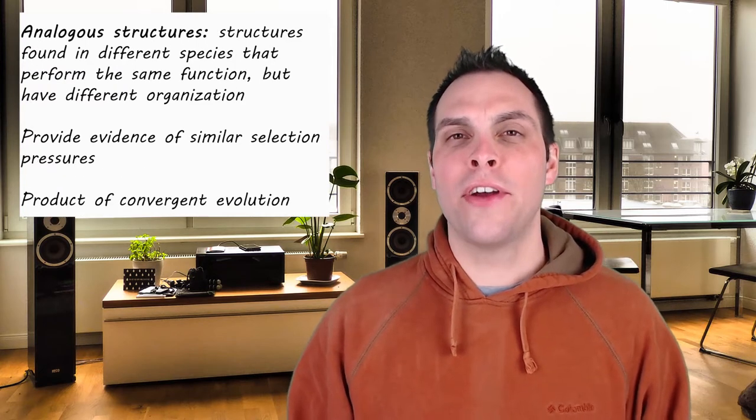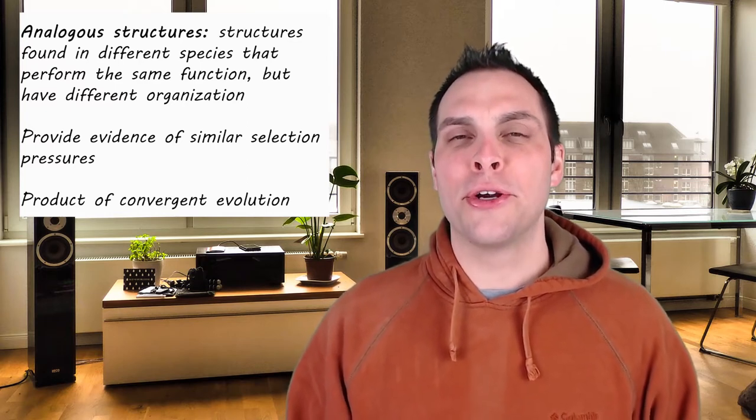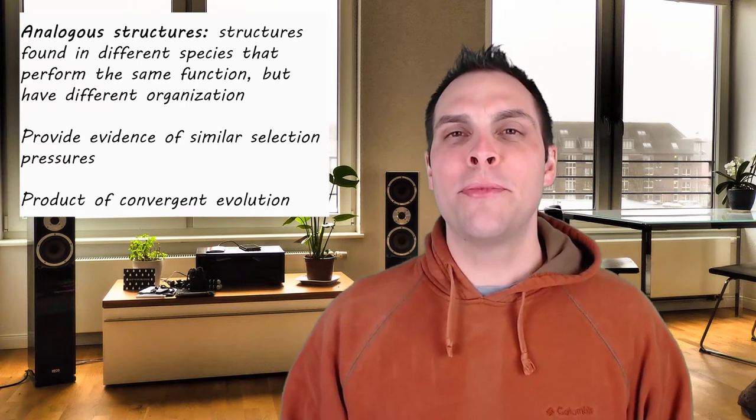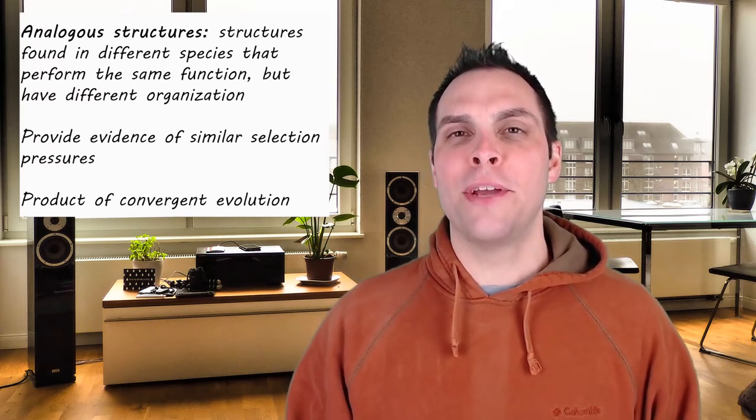On the other hand, analogous traits are the result of convergent evolution. Convergent evolution occurs when similar selection pressures act on entirely different species with the same net result in shaping the species to look very, very similar. In this video, we're going to examine both homologous and analogous structures and learn what they tell us about evolution and how evolution shapes species over time.